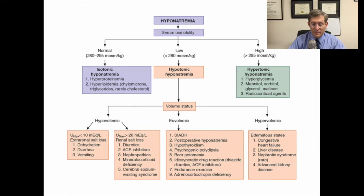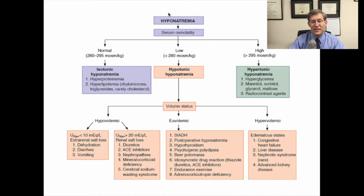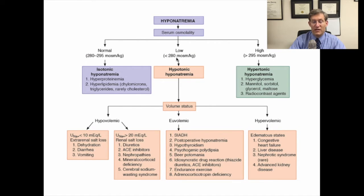In this slide, you'll see an overall structured approach to a patient with hyponatremia. The first thing that you need to do when you have a patient with hyponatremia is to check their serum osmolality, and the easiest way to think about that is as a measure of how concentrated the serum is. Most patients will have a low serum osmolality as measured by the test, and it will be less than 280. So that's true hypotonic hyponatremia.